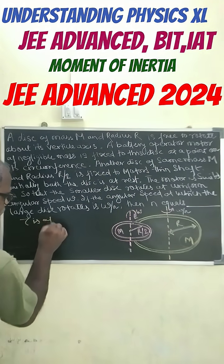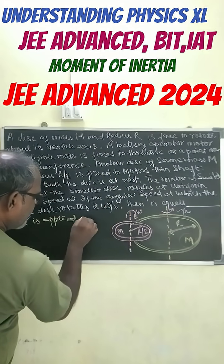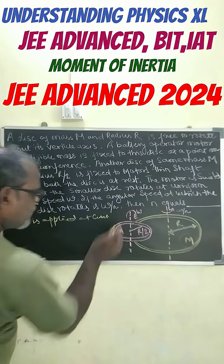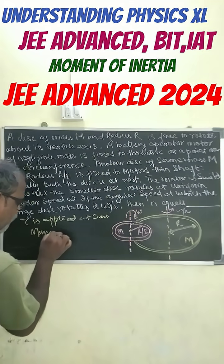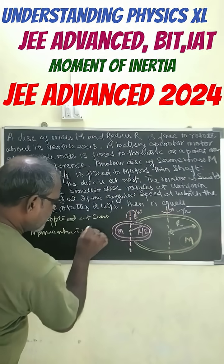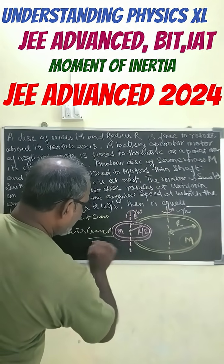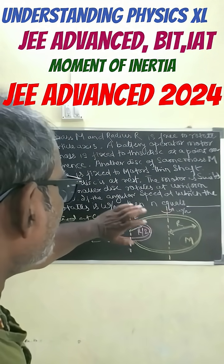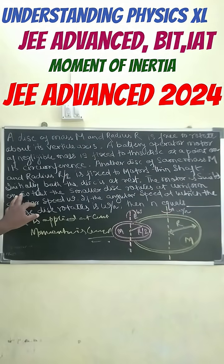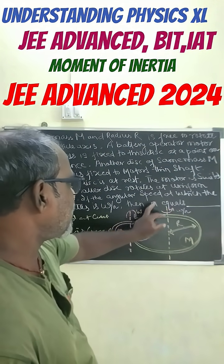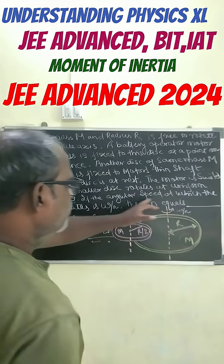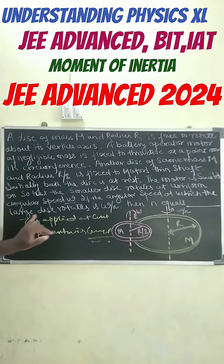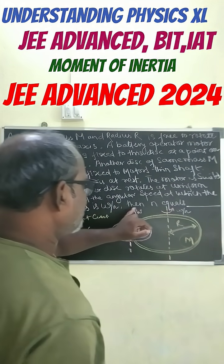Since the torque is applied at the center, angular momentum is conserved. The motor is switched on so that the smaller disk rotates at a uniform angular speed omega. The large disk rotates at an angular speed of omega over n, and we have to find the value of n.